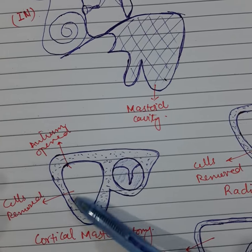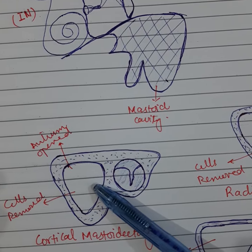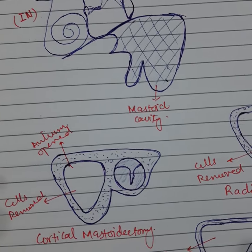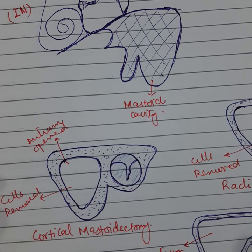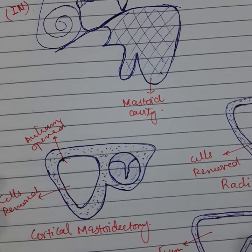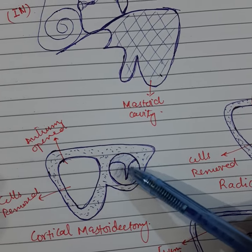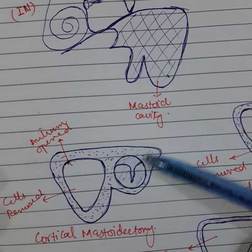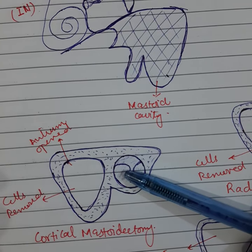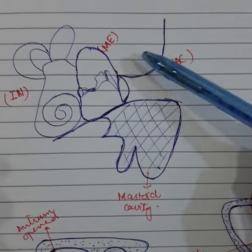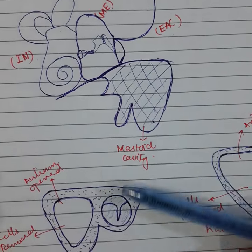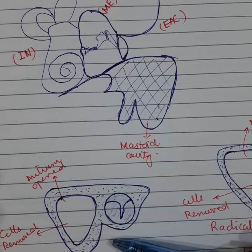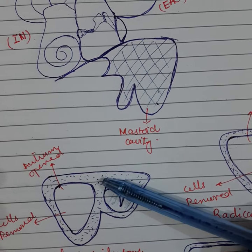In this case, all the cells of the mastoid antrum are removed and it is converted into a single large cavity — no more honeycomb-like. The posterior meatal wall is intact and middle ear structures are not disturbed, as you can see with the intact tympanic membrane and intact middle ear behind it. These structures are preserved. The posterior meatal wall separating the mastoid cavity from the middle ear or external ear is shown to be intact.